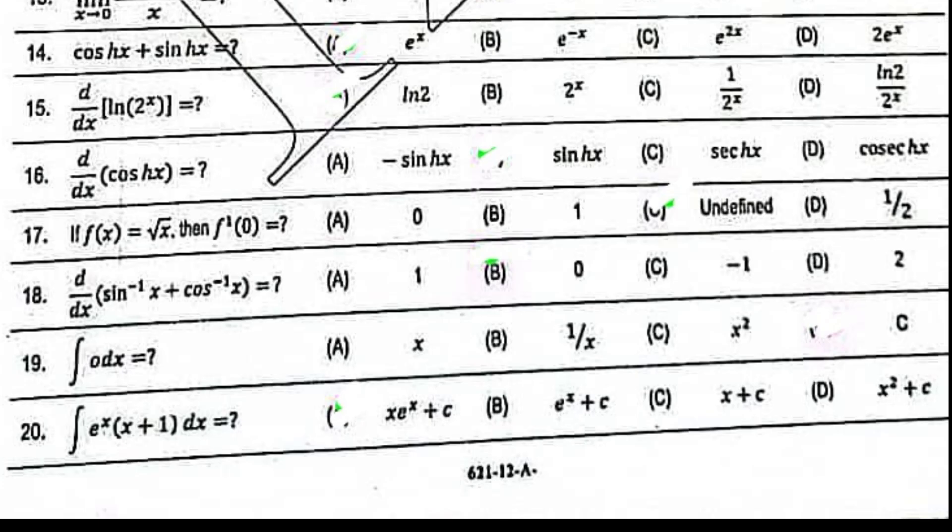Cos hyperbolic x plus sin hyperbolic x equal to e to the power x. D over dx log 2 to the power x equal to log 2. D over dx cos hyperbolic x equal to sin hyperbolic x.